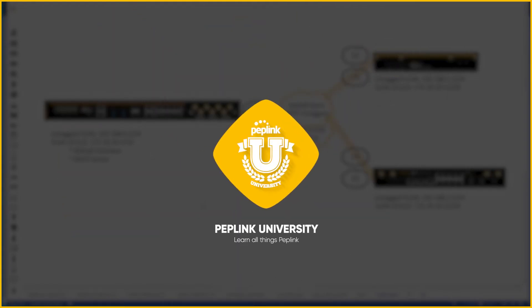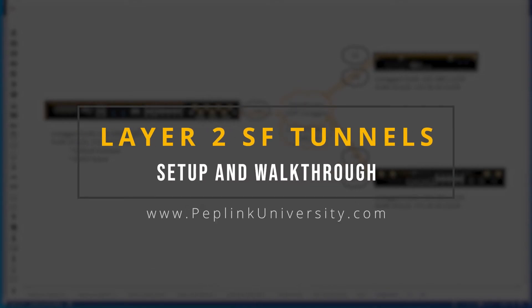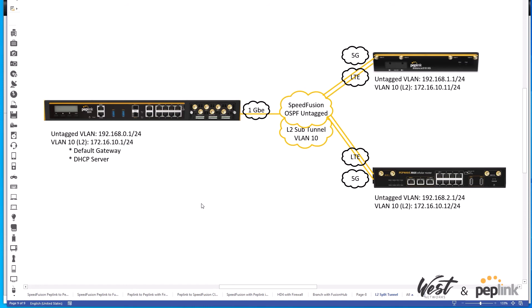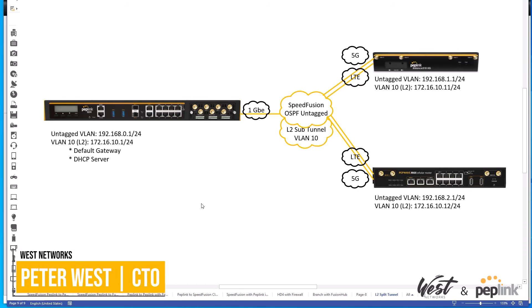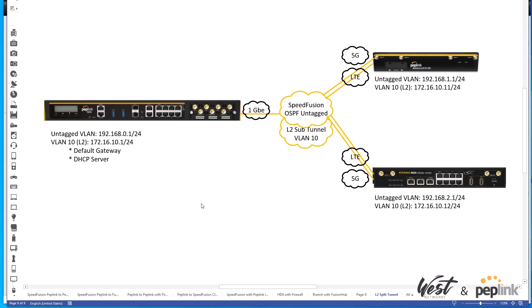Hello and welcome to another training video by West Networks for our Peplink University series. Today we're going to talk about layer 2 SpeedFusion tunnels. The goal is to create a split tunnel using SpeedFusion and InControl so that the primary tunnel will do OSPF at layer 3 for any known networks on any of the routers, and then we're going to have a sub-tunnel dedicated to a layer 2 broadcast of our VLAN 10.